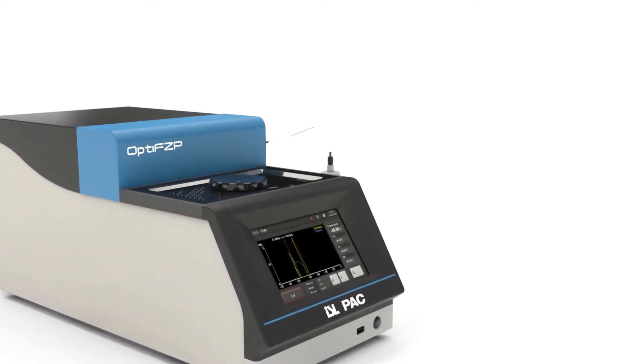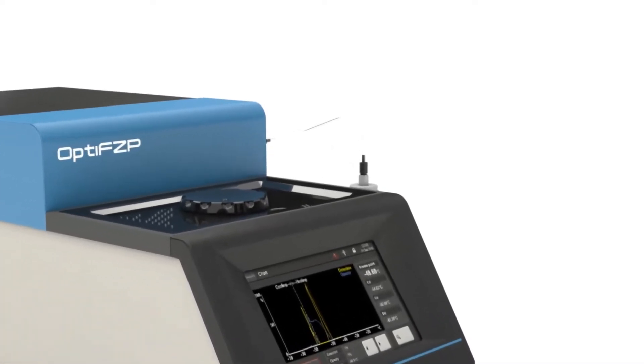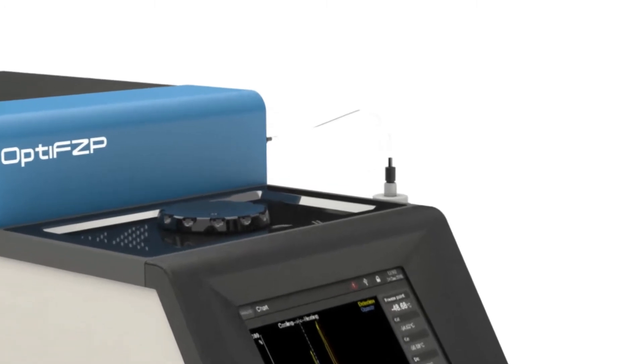OPTI-FZP is extremely simple to operate. The plug-and-play concept precludes any lengthy training to operate the instrument, which is now common across all new PAC instruments. Simply set up the sample ID and test conditions, load 10 milliliters of jet fuel into the instrument, and push the start button.